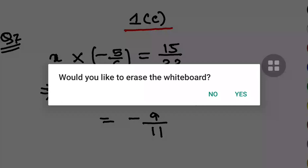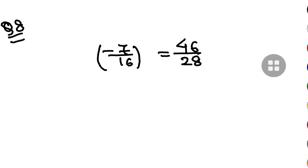Question number 8 is similar. Again the product of the two numbers is 46 by 28. One of the numbers is minus 7 by 16. We have to find the other number. I will assume that the other number is x.